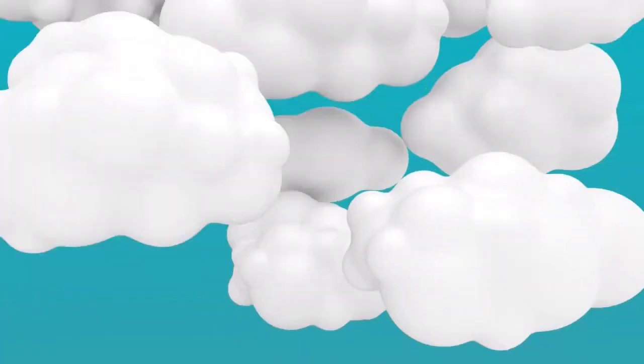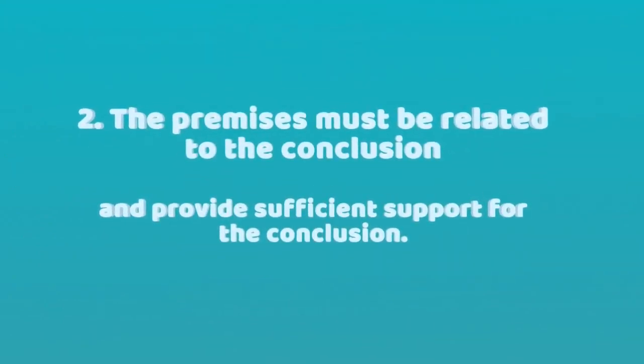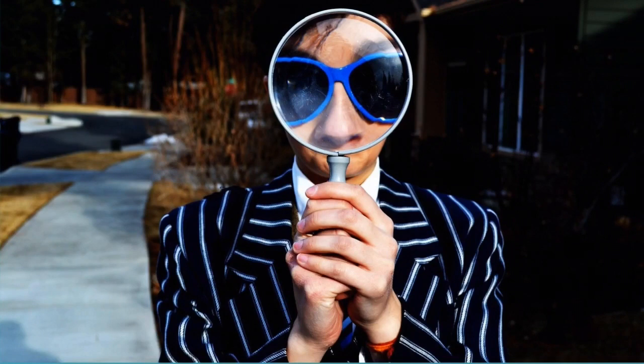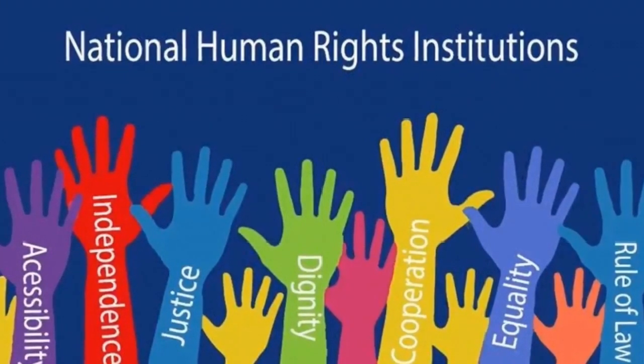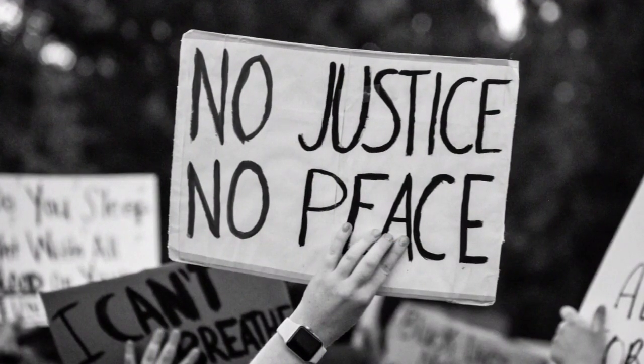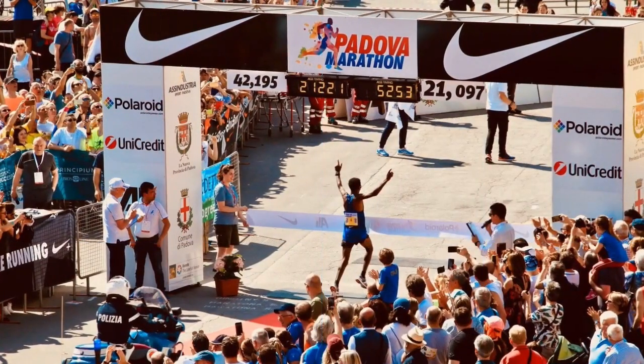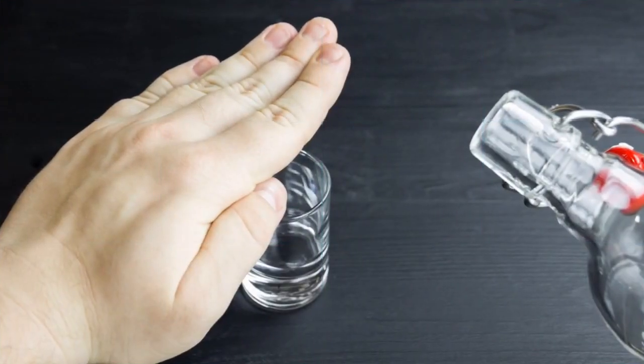Secondly, the premise must be related to the conclusion and provide sufficient support for that conclusion. However, determining the relevance between premises and conclusion is not always easy, especially when it comes to complex issues such as ethics, health, justice, or politics. For example, in the argument 'we must exercise almost every day because athletes exercise every day,' the premise is related to the conclusion only if we are athletes — otherwise it's not relevant. But is a candidate's previous alcohol problem relevant to their ability to govern a country?